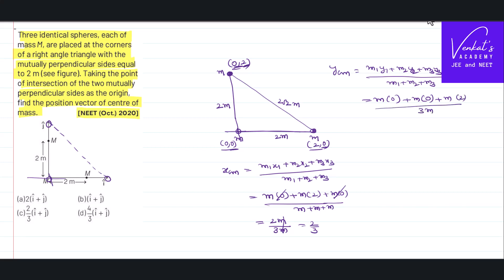So what is r_cm, the position in terms of a vector, is x_cm·i_cap plus y_cm·j_cap. x_cm is 2/3·i_cap, y_cm is 2/3·j_cap, so the value is 2/3 of (i_cap plus j_cap).